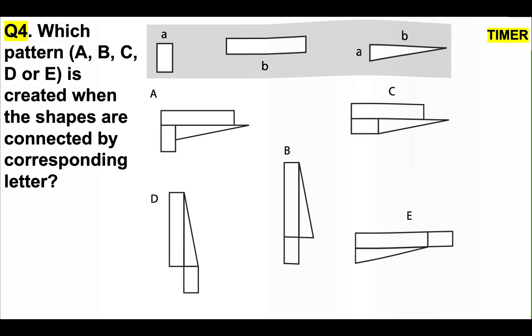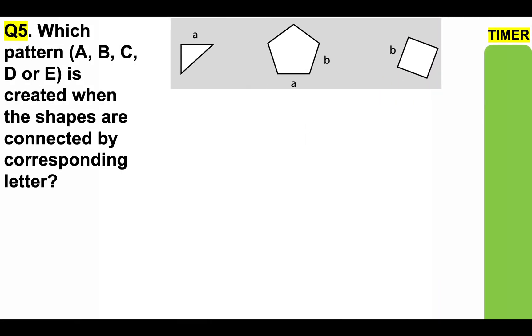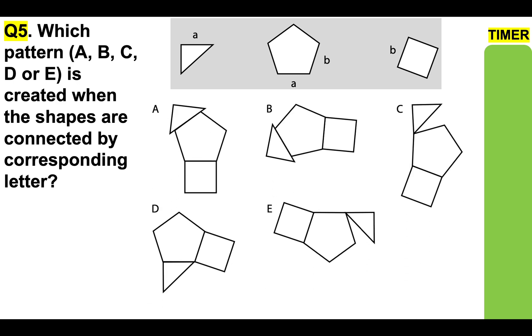And the final one of this particular spatial reasoning test: which pattern — A, B, C, D, or E — is created when the shapes are connected by corresponding letter? Here's the timer.